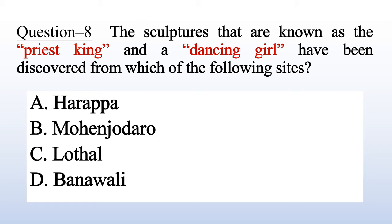Question 12: The sculptures known as the 'Priest King' and the 'Dancing Girl' have been discovered from which of the following sites? A. Harappa, B. Mohenjo-daro, C. Lothal, D. Banavali. Answer is B: Mohenjo-daro.